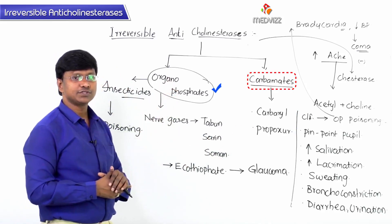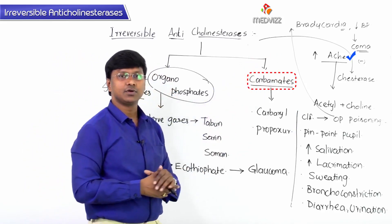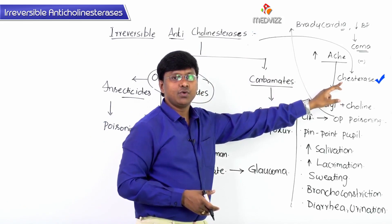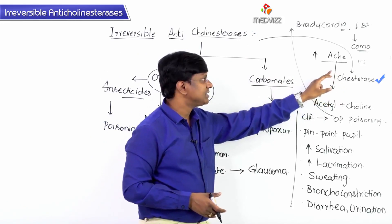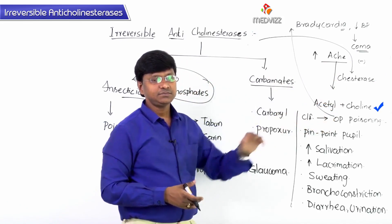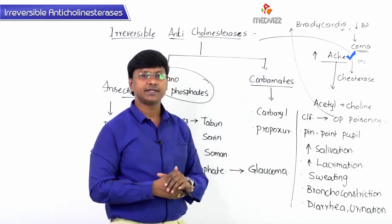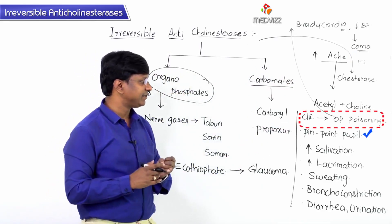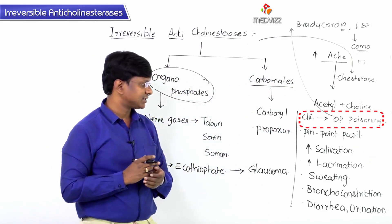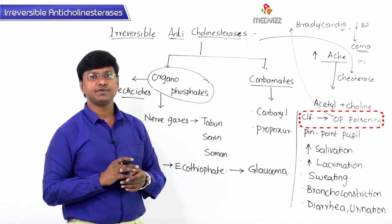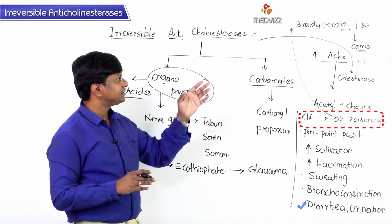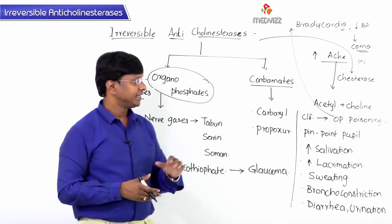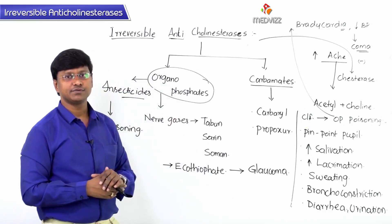In organophosphorous poisoning, acetylcholine levels grossly increase because these substances inhibit the enzyme cholinesterase, preventing conversion of acetylcholine. The clinical features include pinpoint pupil, increased salivation, lacrimation and sweating, severe bronchoconstriction, diarrhea, excessive urination, bradycardia, hypotension, and finally the individual ends up in coma.